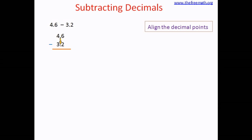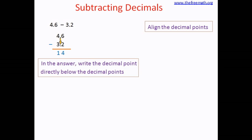We subtract from the right-hand side to the left. So 6 minus 2 equals 4, and 4 minus 3 equals 1. After the subtraction, we write the decimal point in the answer directly below the decimal points of the numbers we subtracted. Our answer is 1.4. The next example is 57.423 minus 25.2.